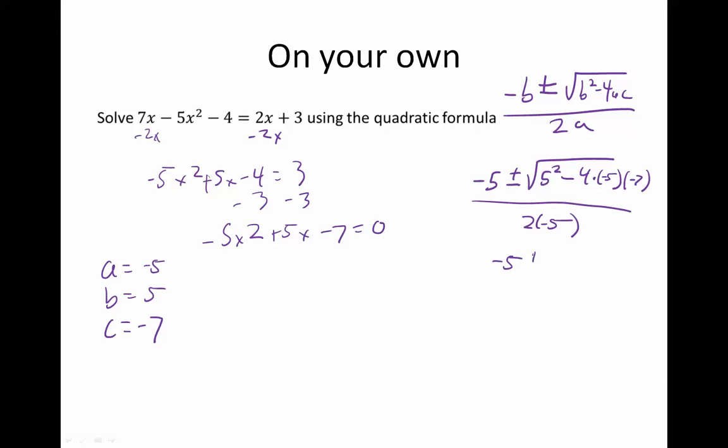So this is negative 5 plus or minus the square root of 25 minus 140 all over negative 10. And then when we combine those things beneath the root, we get 25 minus 140. That looks like root negative 115 to me over negative 10.